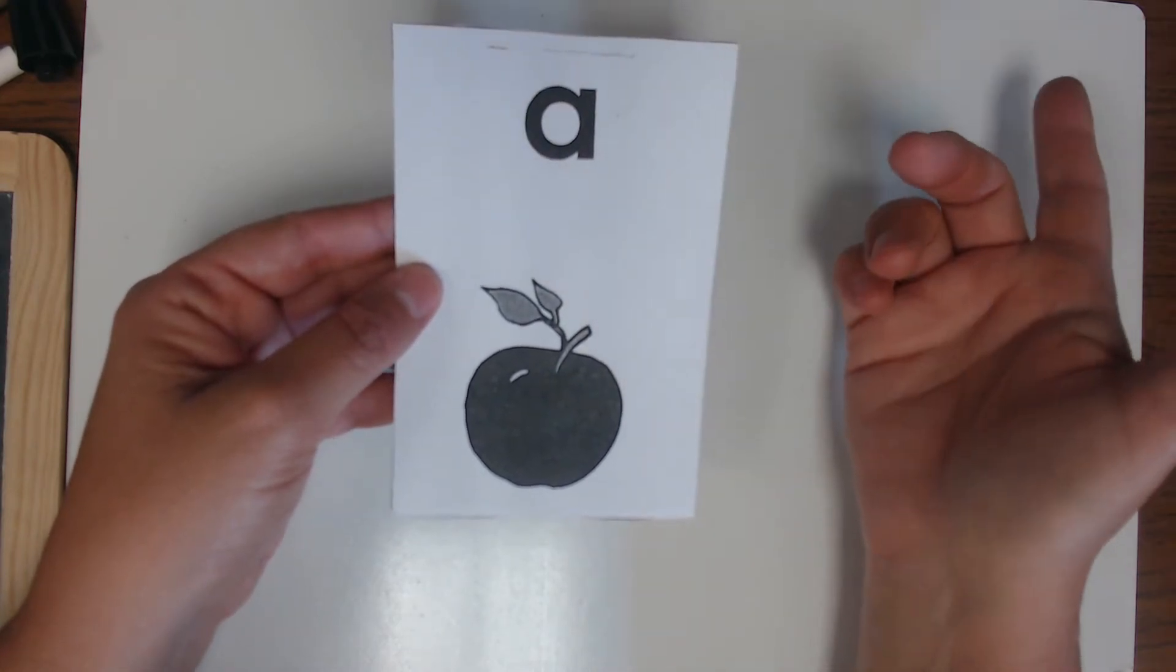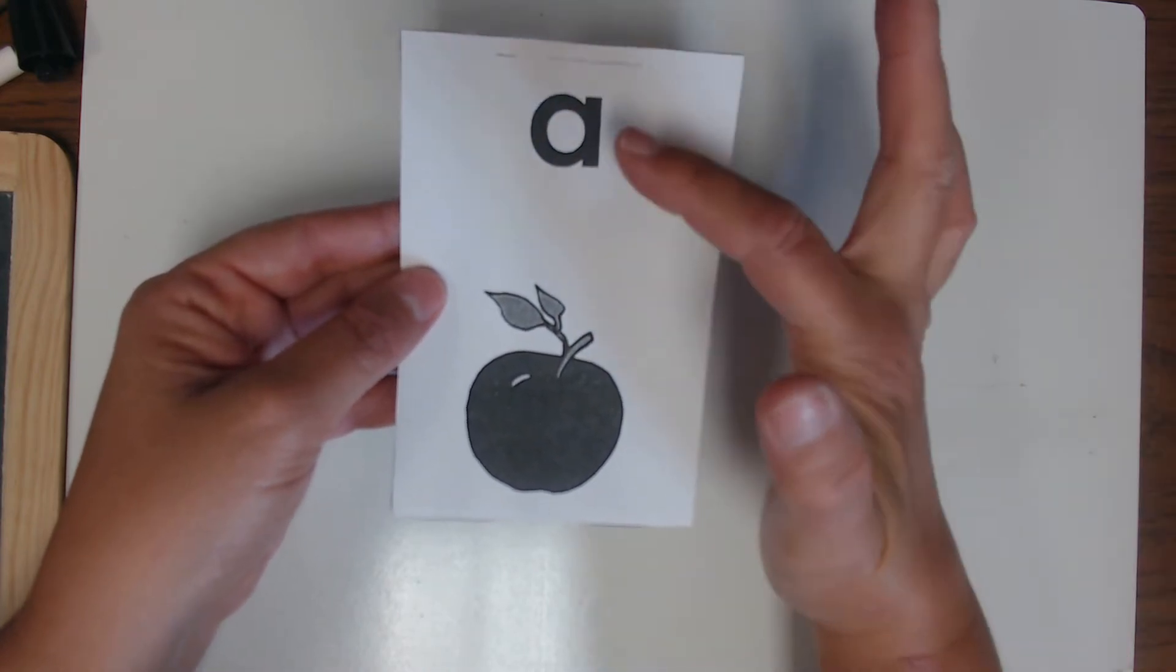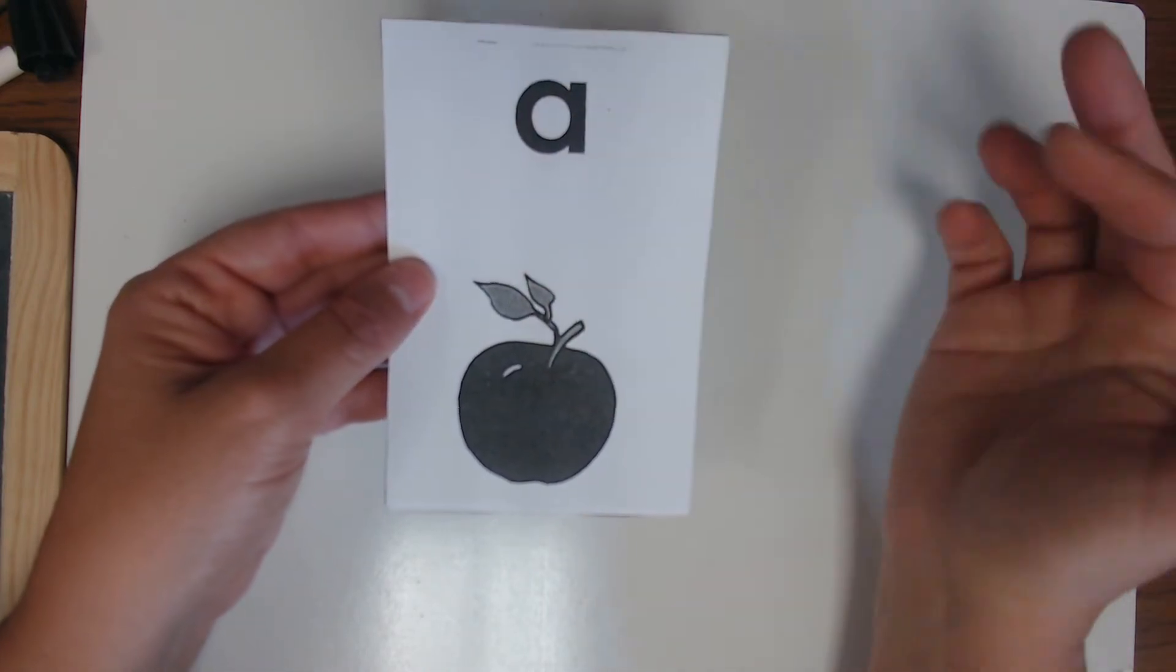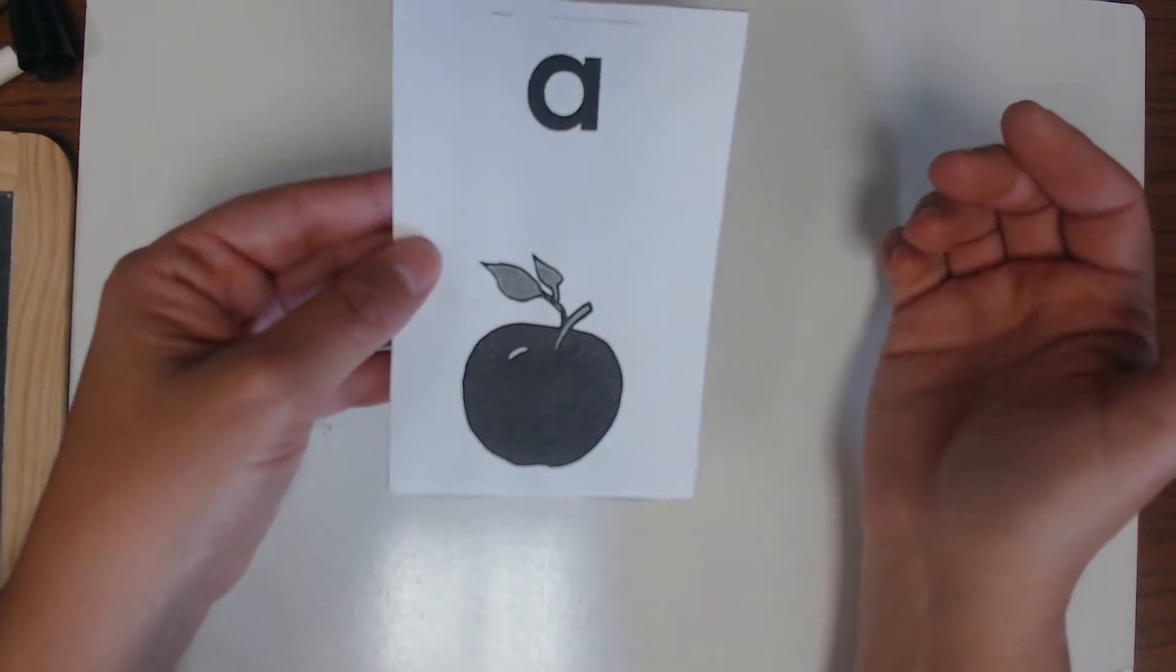And then you would have them read it this way: A, Apple, A. So we get the name of the letter, we get the sound of the letter as it's isolated in that picture card.